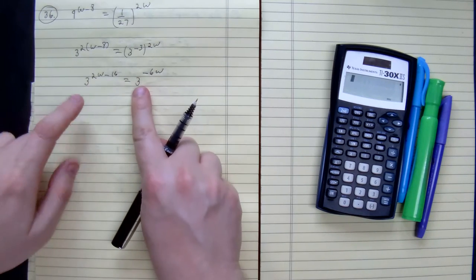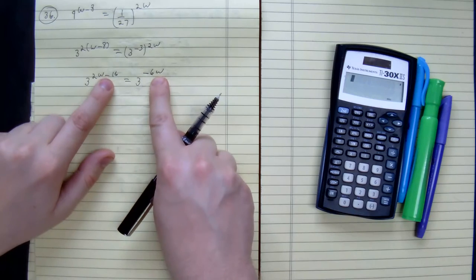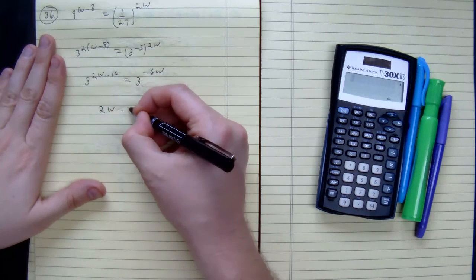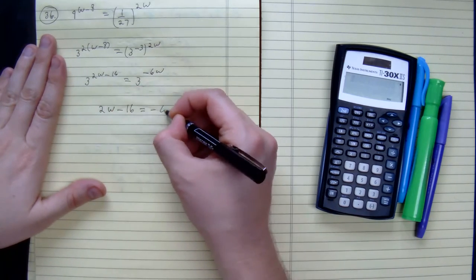Since we have a common base, I can just equal out the exponents. So we get 2w minus 16 equals negative 6w.